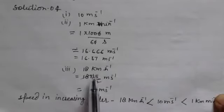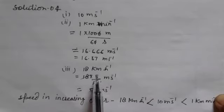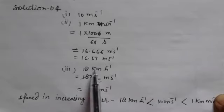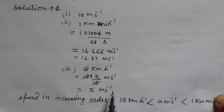The third speed is 18 km per hour. We change it to meter per second by multiplying by 5 by 18. After solving, the result will be 5 meters per second.